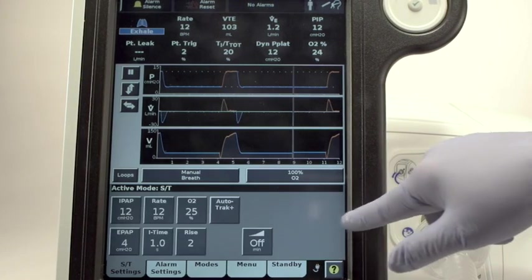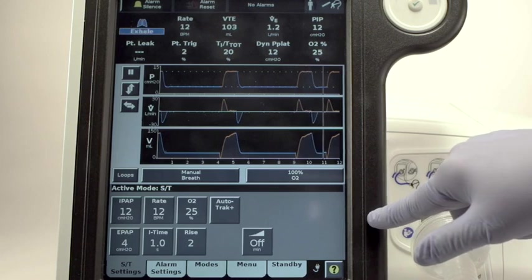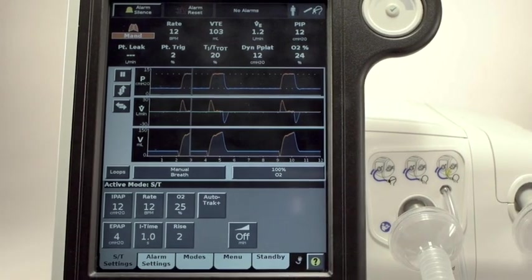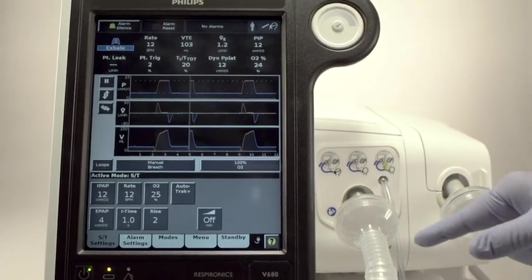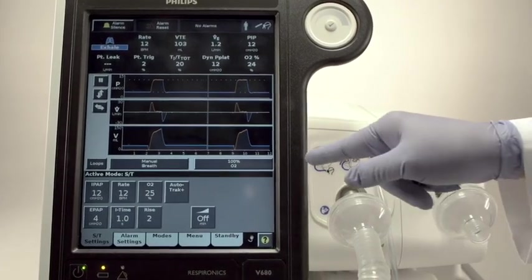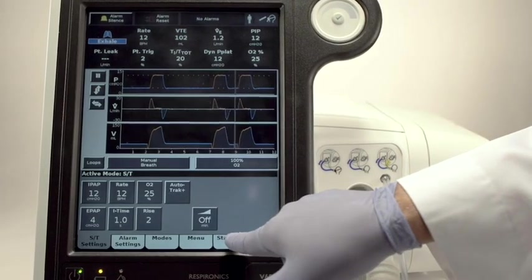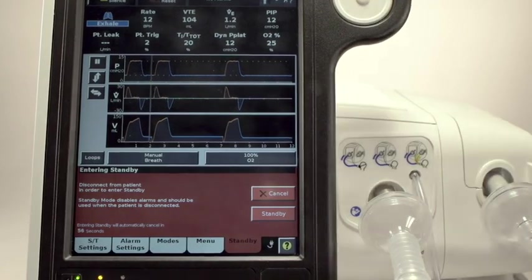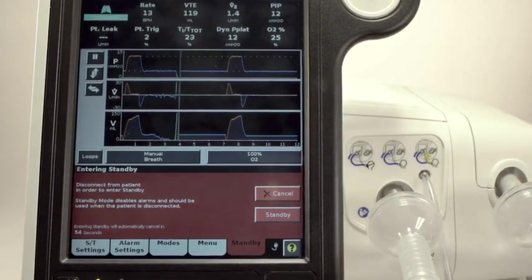Now, let's demonstrate how V680 is truly two ventilators in one by changing it to a dual-limb invasive ventilator. You can do this by either touching Standby, disconnecting the patient, and touching the Configuration Screen button, or by touching the Power button and then confirming you want to power down the unit. You would then start from the beginning.